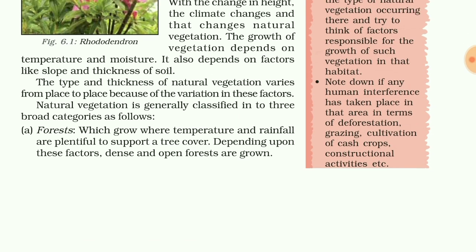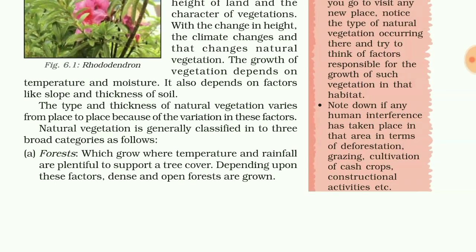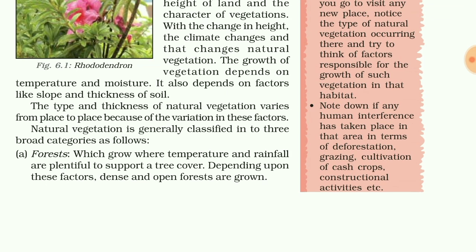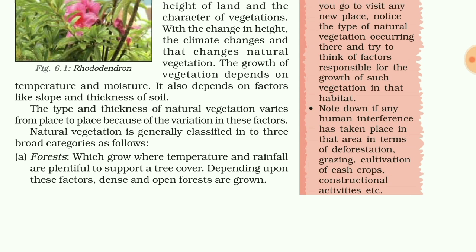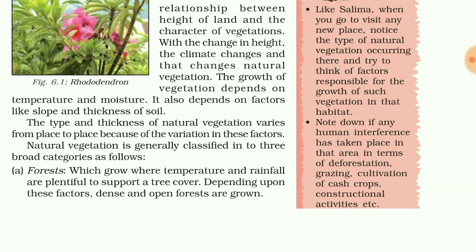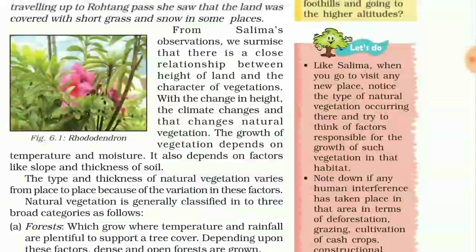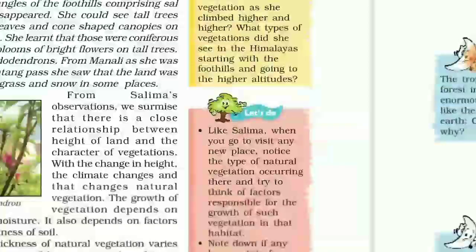The nature of vegetation is generally classified into three broad categories. First is forest, which grows where temperature and rainfall are plentiful to support tree cover. Depending upon these factors, dense and open forests are grown.